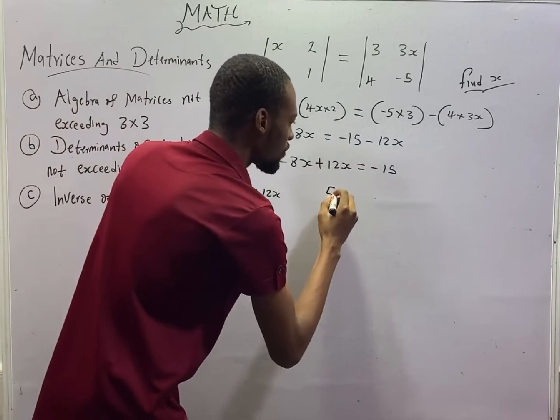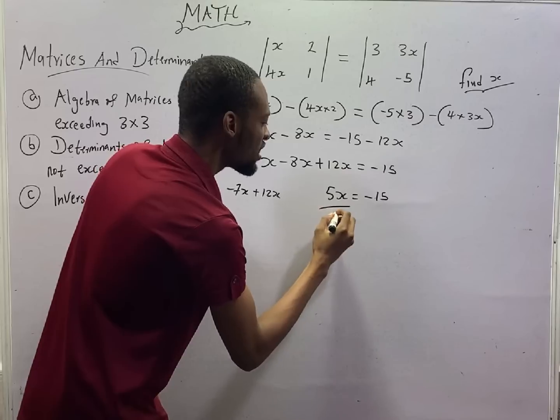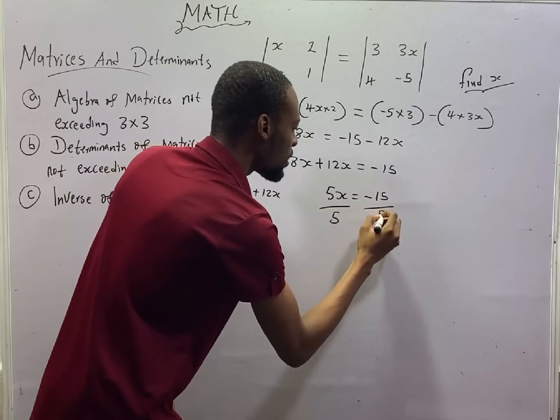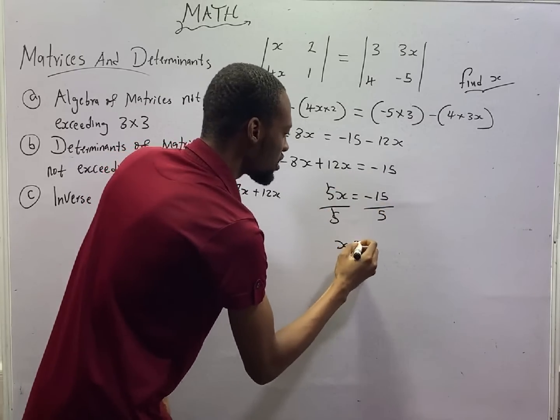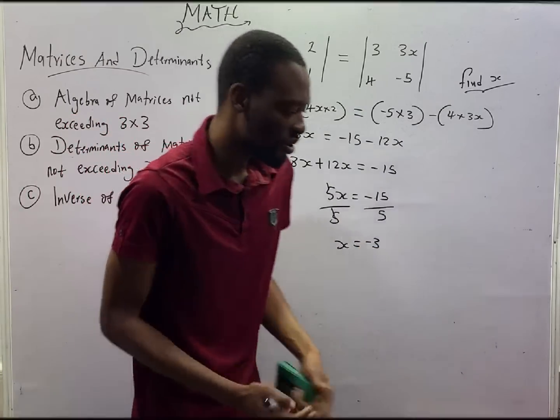So, 5S equals minus 15. To get S, we divide both sides by 5. S is therefore equals minus 3. That is the value of S.